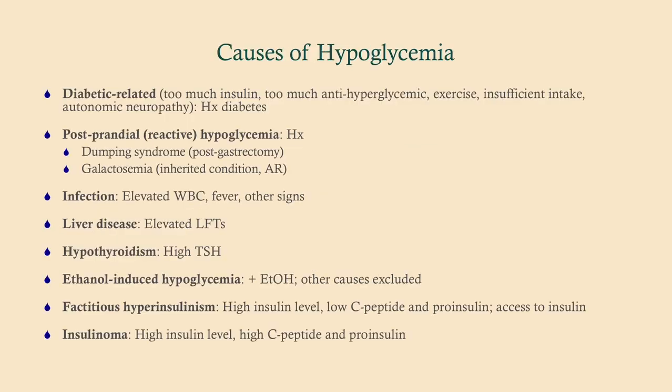Other causes of hypoglycemia include diabetic-related causes — probably the number one cause — where patients took too much insulin or too much of their antihyperglycemic, or they exercised intensely without reducing their insulin dose. You can also get postprandial or reactive hypoglycemia, such as dumping syndrome or galactosemia. Infections, liver failure (remember the liver handles much gluconeogenesis), hypothyroidism, and ethanol-induced hypoglycemia are other causes. Factitious hyperinsulinism, generally in the context of Munchausen syndrome, presents with high insulin and low C-peptide. Insulinoma is very rare — roughly 1 in 500,000 — and presents with high insulin, high C-peptide, and high pro-insulin.